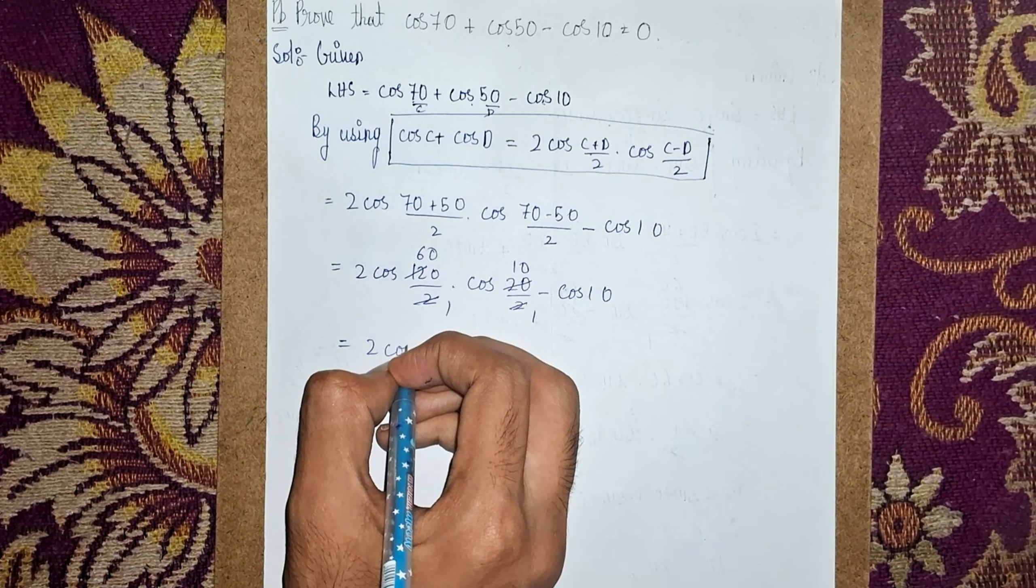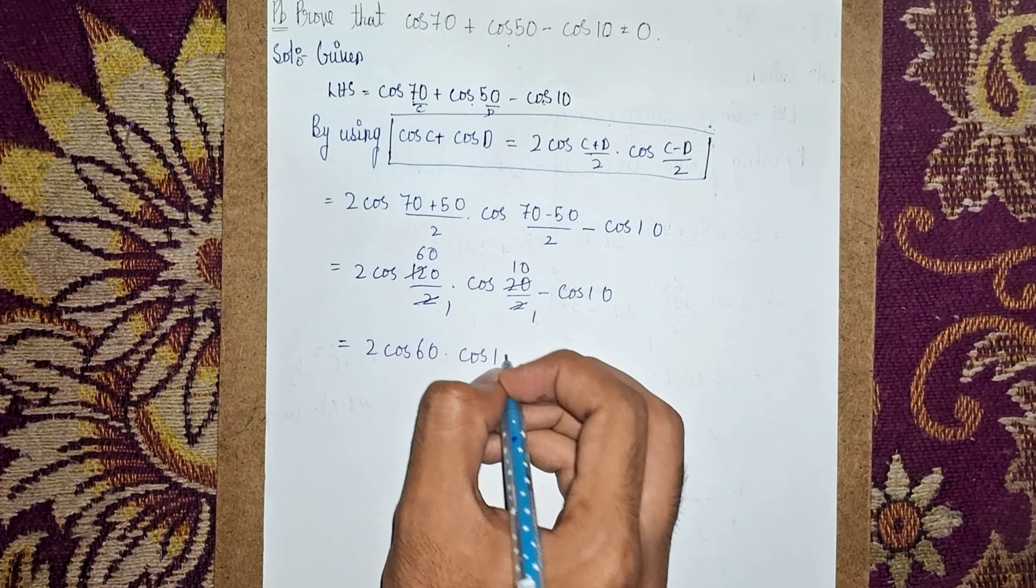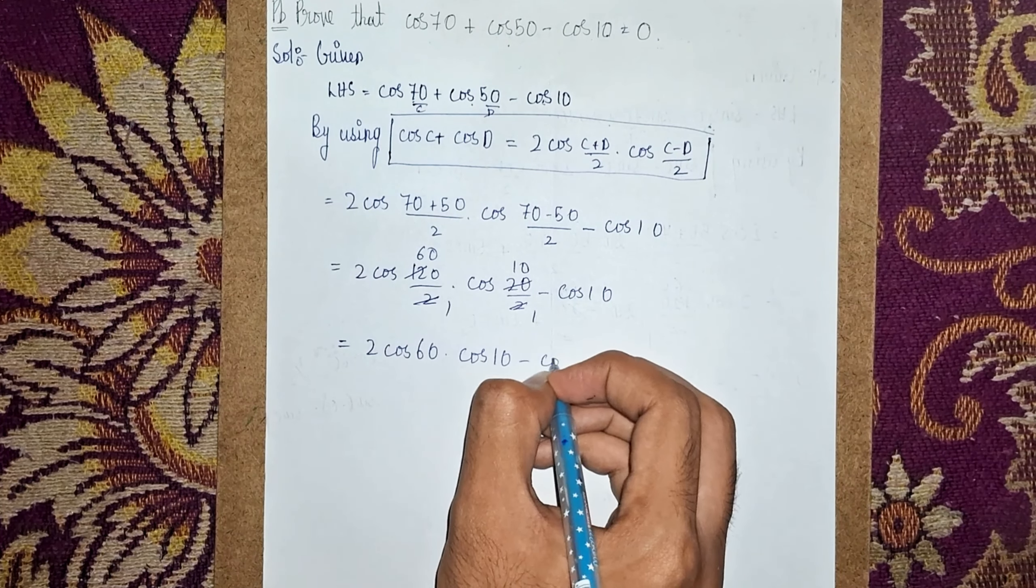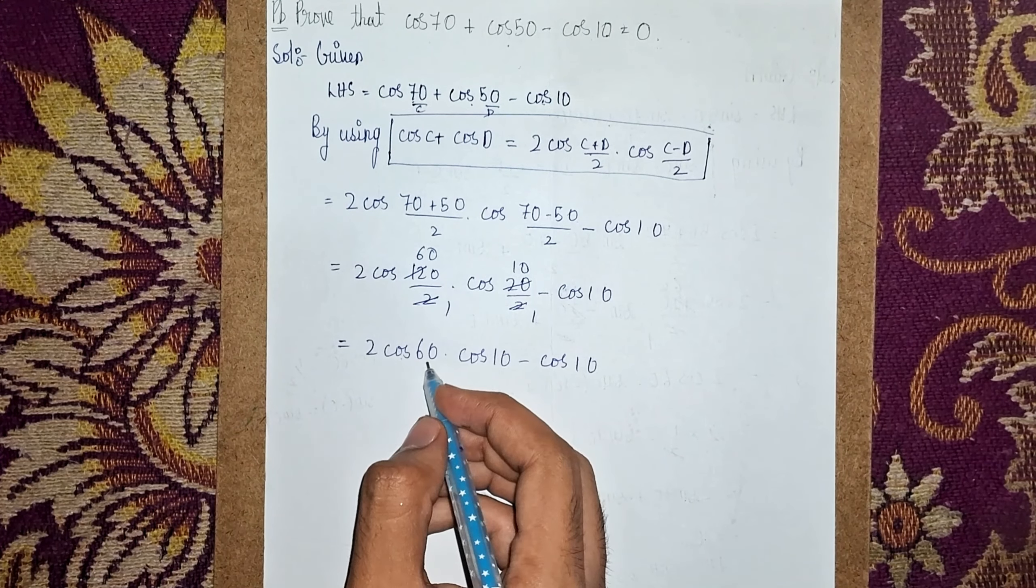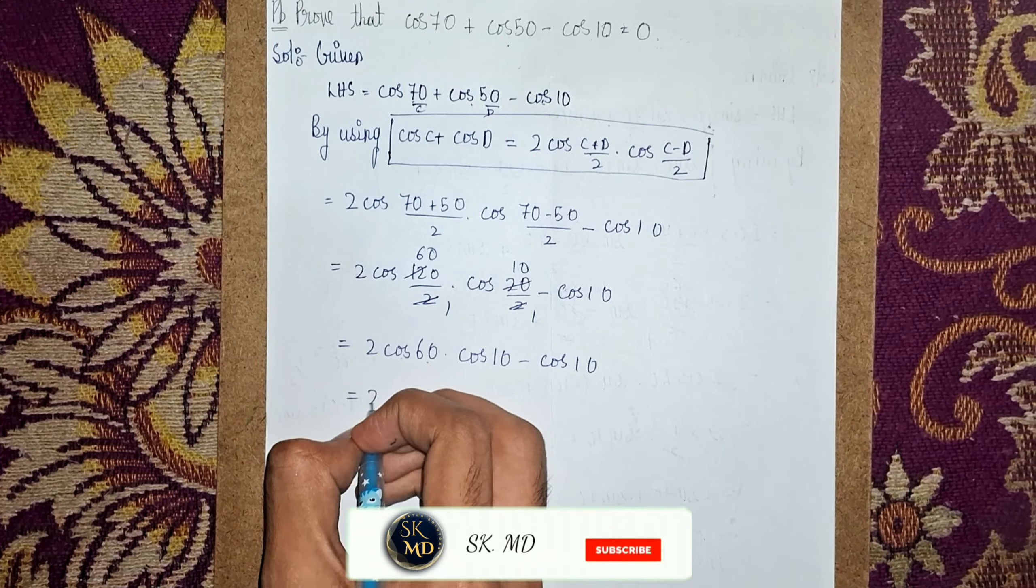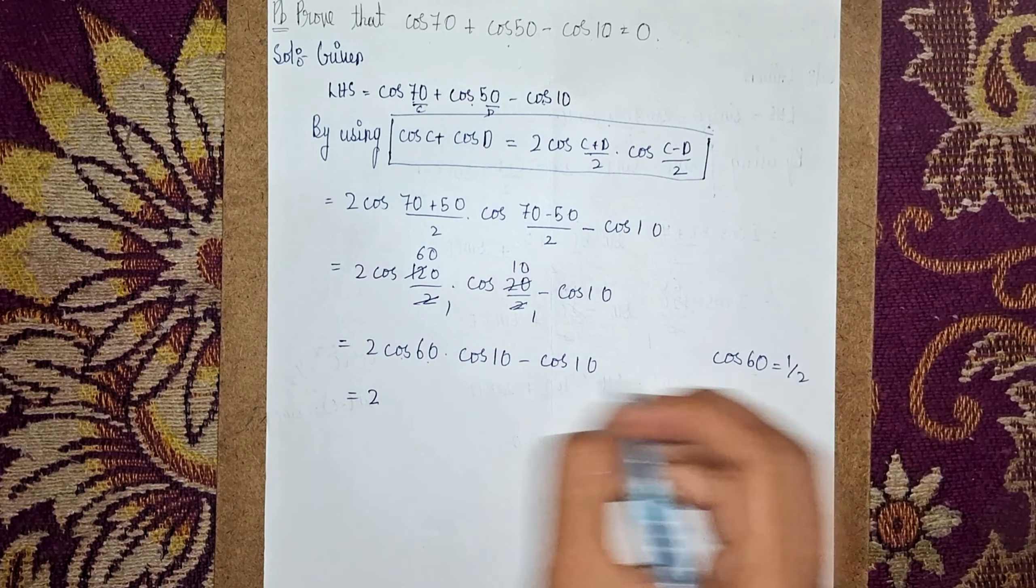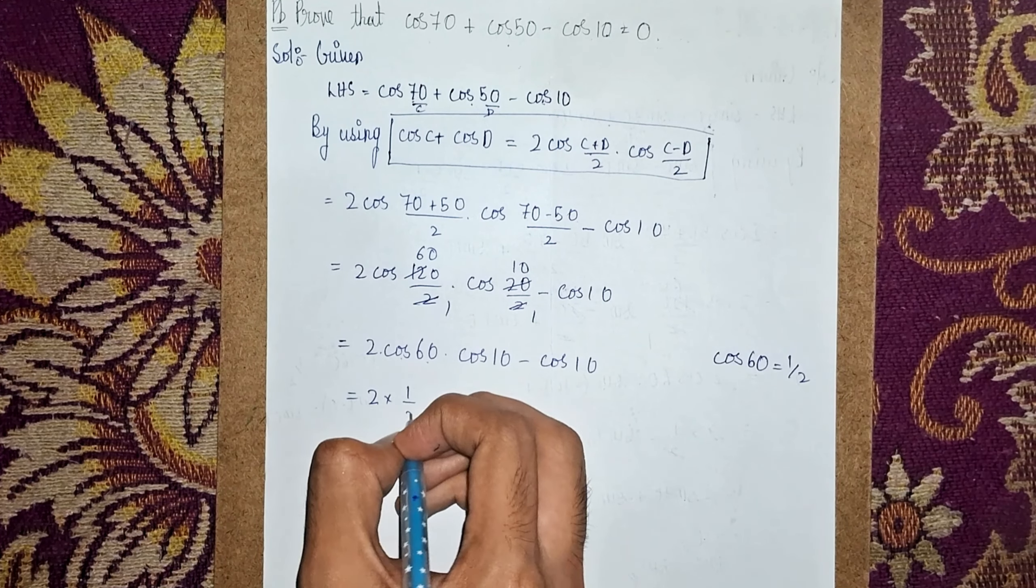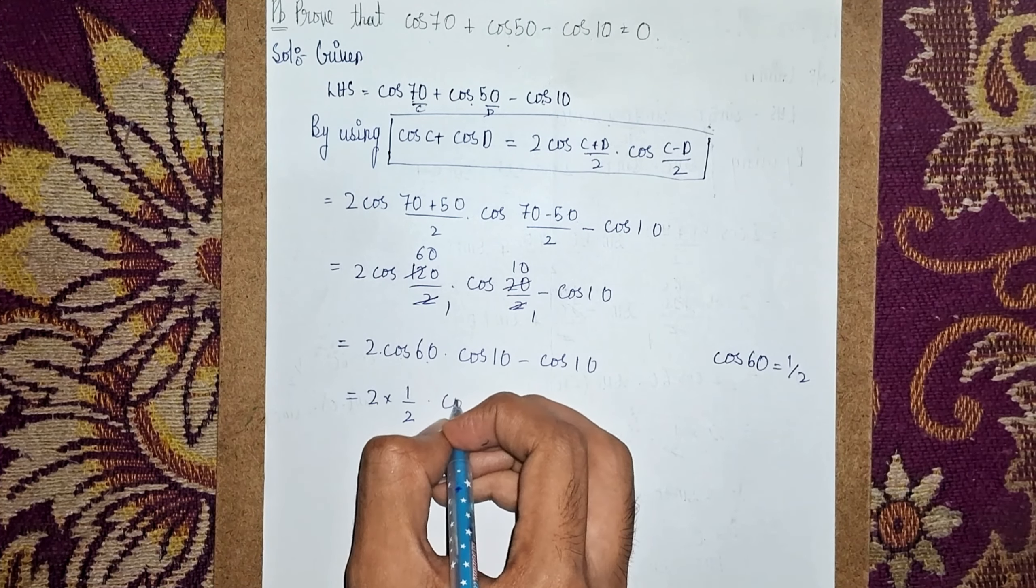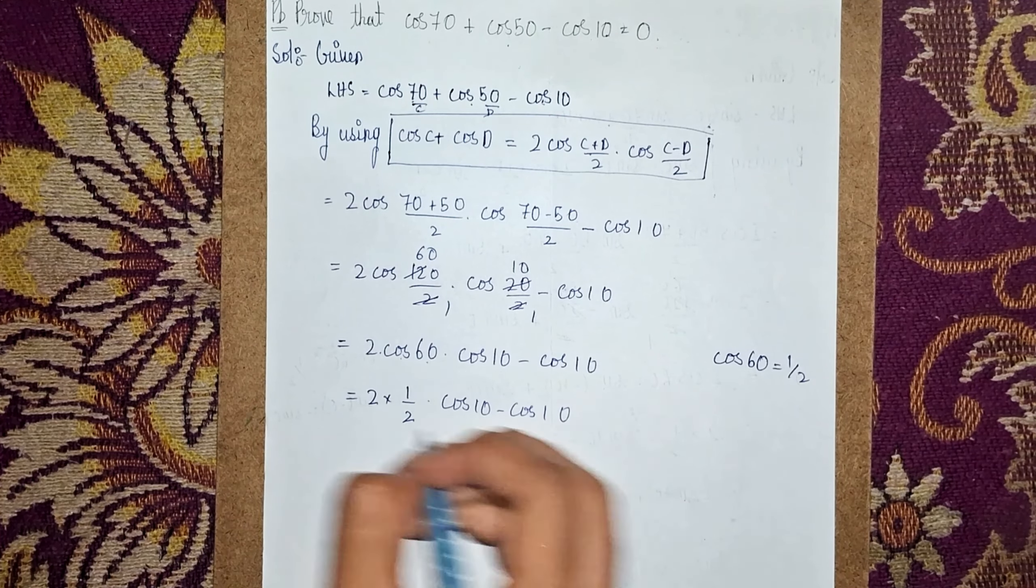Now in trigonometry we know the value of cos60°. Write here: 2 cos60° value is 1/2. Instead of cos60° I can add 1/2 here, multiplied by cos10° - cos10°.